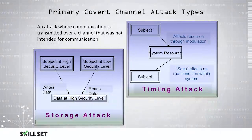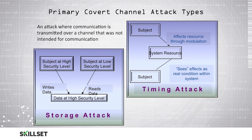A covert channel attack is where we use a channel that was not intended for communication to transmit data. With a covert storage attack, we have a subject at a low security level who is able to read data at a high security level that they should not be able to access. With a covert timing attack, information is transmitted by altering a system resource's performance or timing.